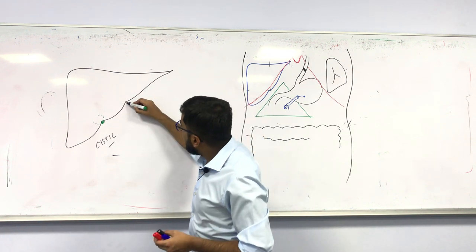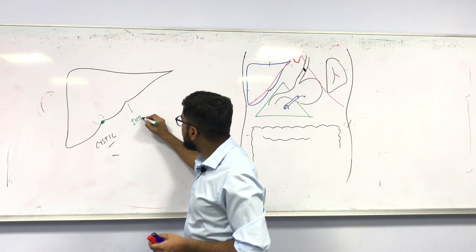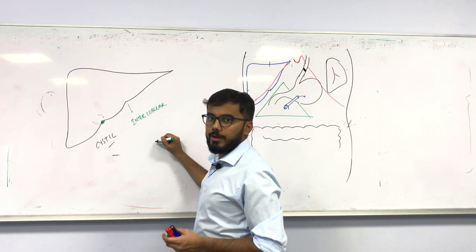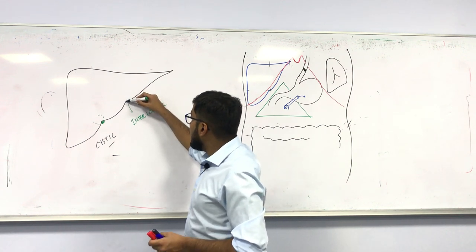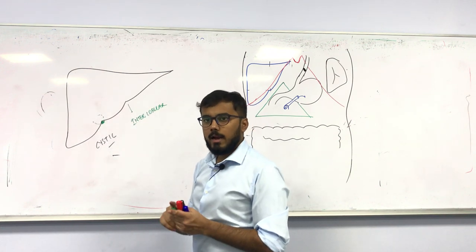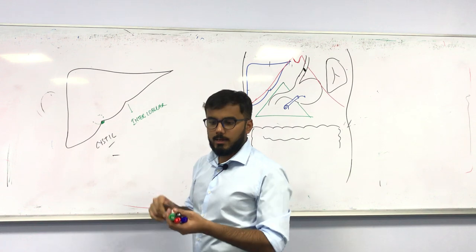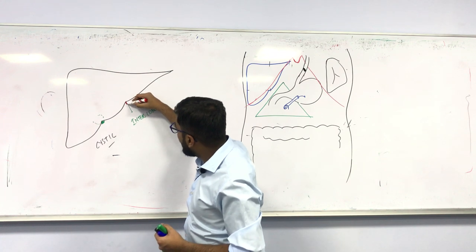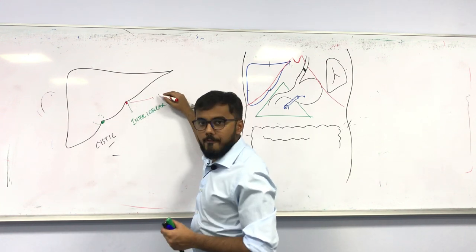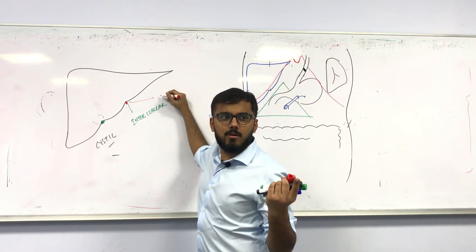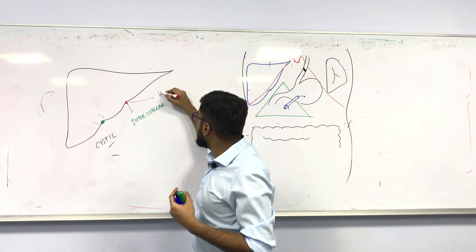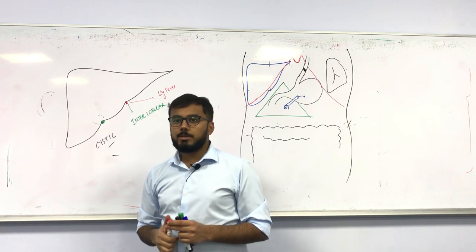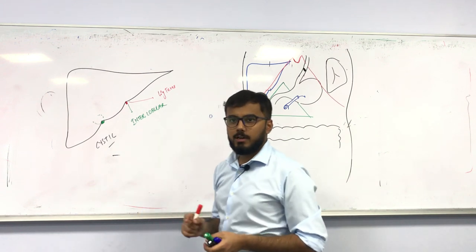The second notch is called the interlobular notch, because it divides the liver into the right and left lobe on the anterior surface. This notch has another name: just below it you find a small ligament called ligamentum teres, so it is also called the notch for ligamentum teres.